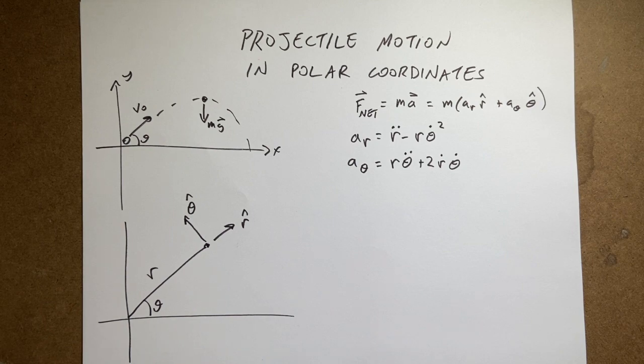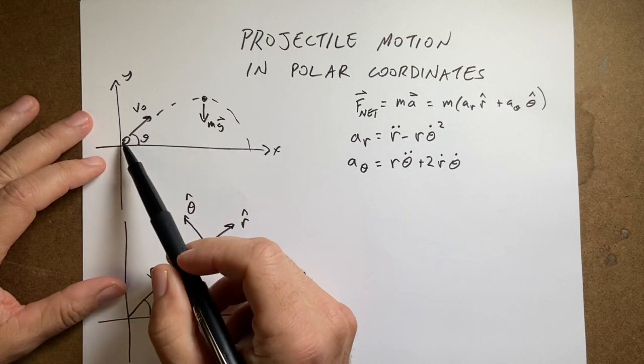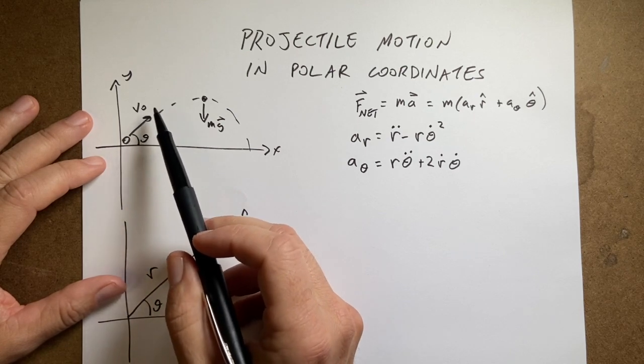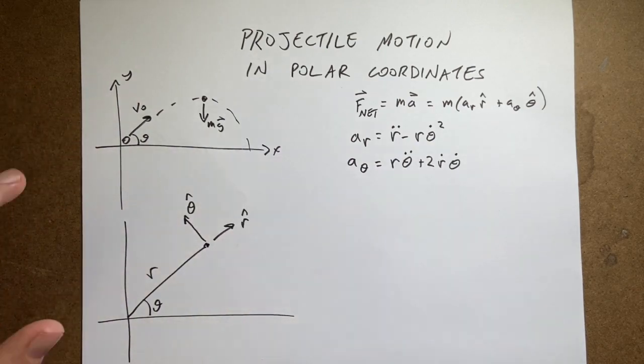A quick review. Here I have some object in Cartesian coordinates, launched with some initial velocity v0 at some angle theta. And then there's only the gravitational force acting on it.